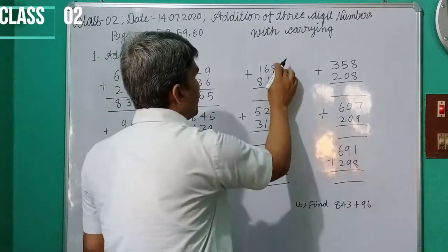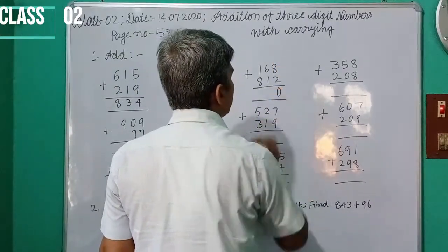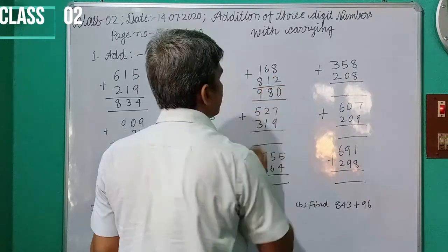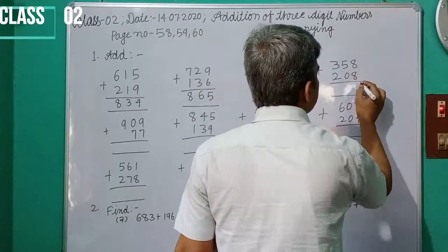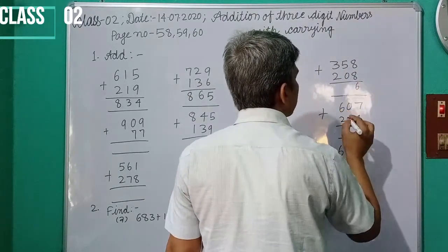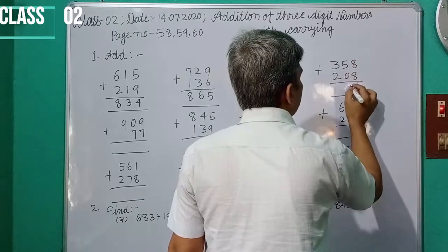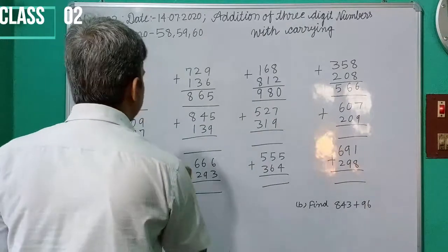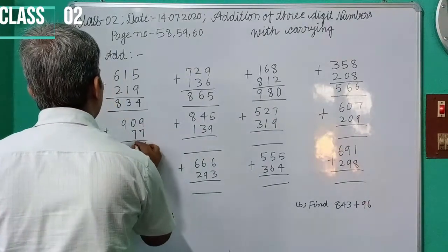Now, 729 plus 136 equals 865. 8 plus 2 equals 10, write 0, carry 1. 6, 1, 7. 7, 1, 8. 8, 1, 9. Next, 168 plus 312 equals 480.